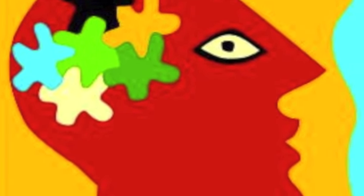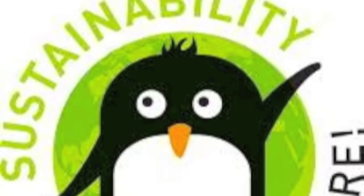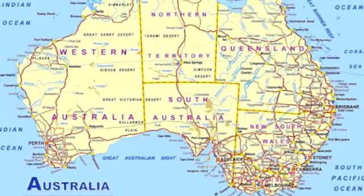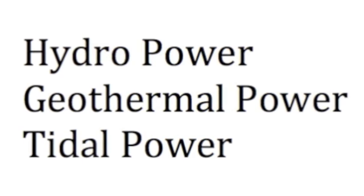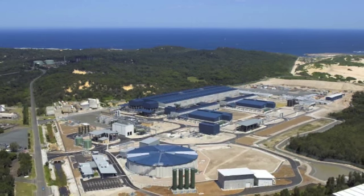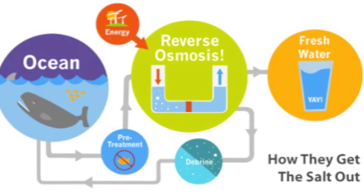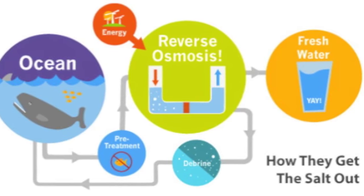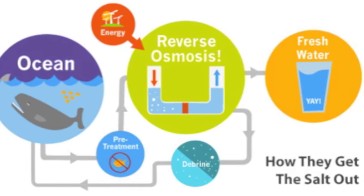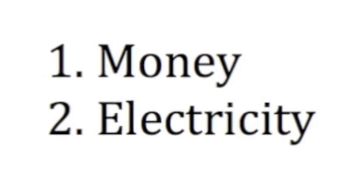With these key factors in mind, what is being done to ensure the sustainability of our water? Key solutions on a national scale include the use of hydropower, geothermal power or tidal power, or introducing desalination plants. Desalination plants take seawater and, through a process called reverse osmosis, remove salt and other impurities to turn it into fresh water. So, as most Australians live near the coast, why aren't there more already? There are two main reasons: it costs a lot of money and a lot of electricity.